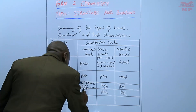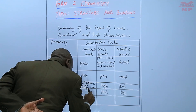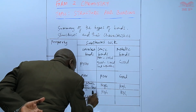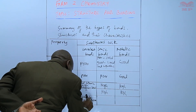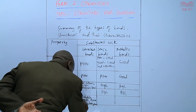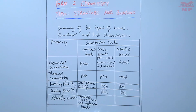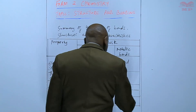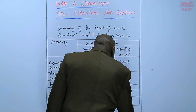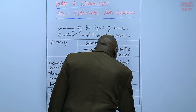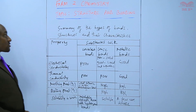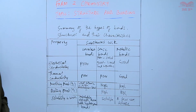Finally, in terms of solubility, covalent substances are insoluble except those with hydrogen bonds — all others are insoluble. Ionic compounds are soluble. For metallic bonds, a few are soluble. So basically, that is a summary of the bond types, the structures, and their characteristics.